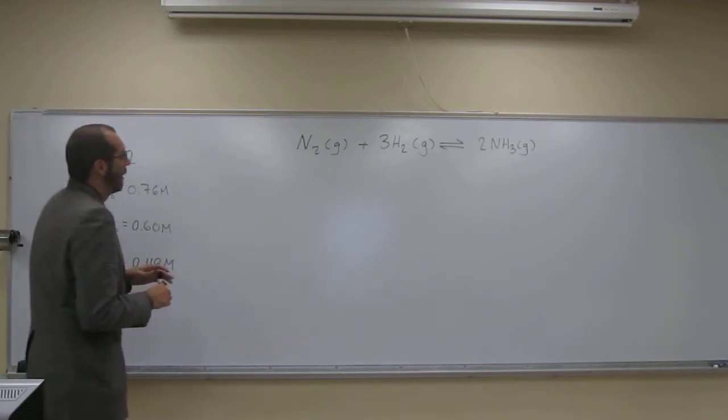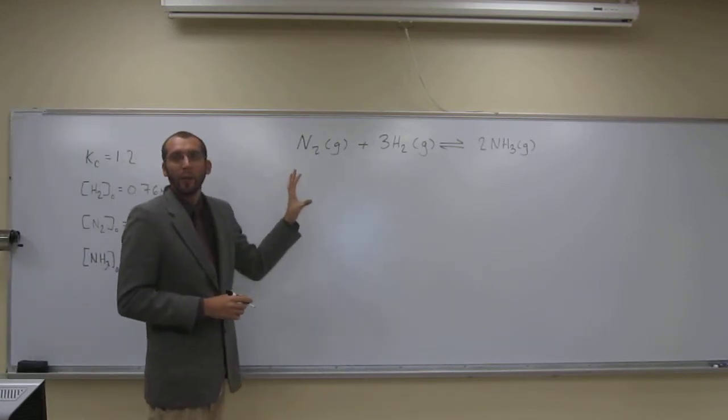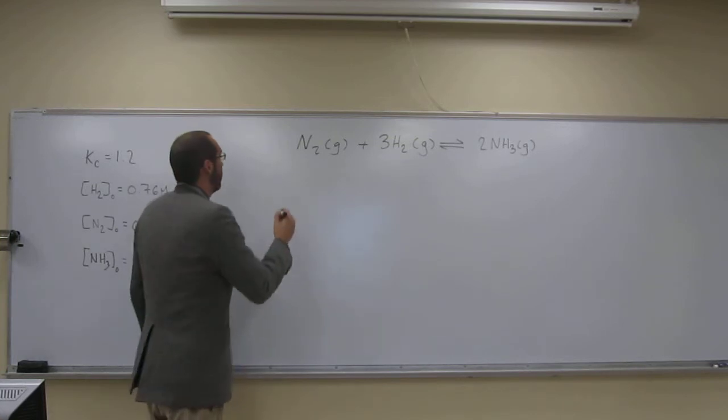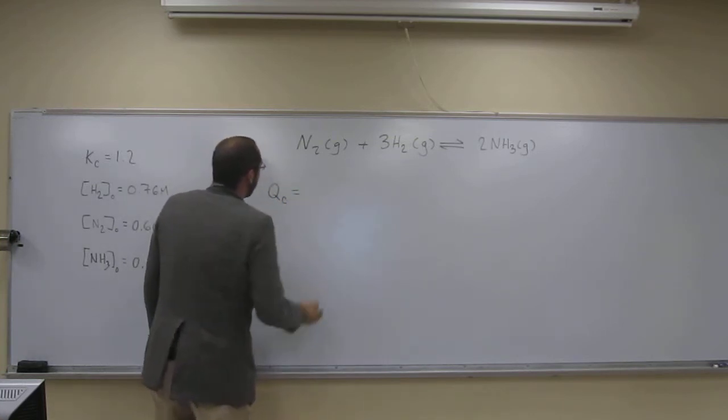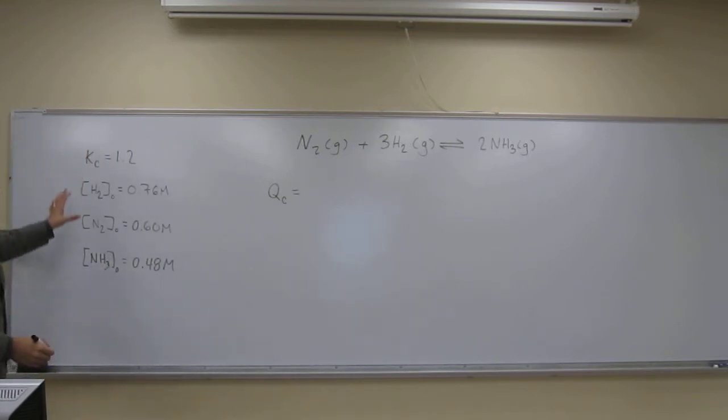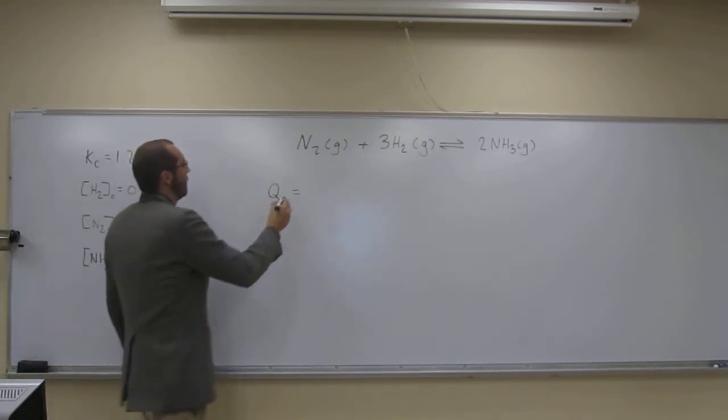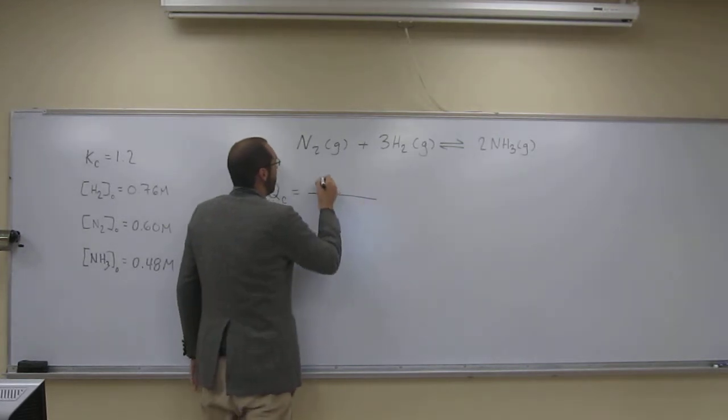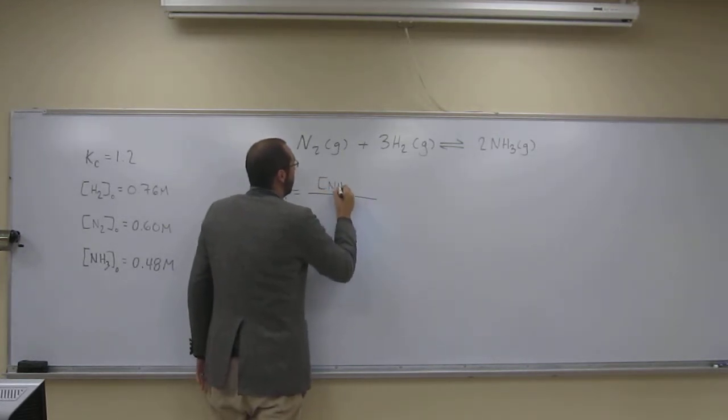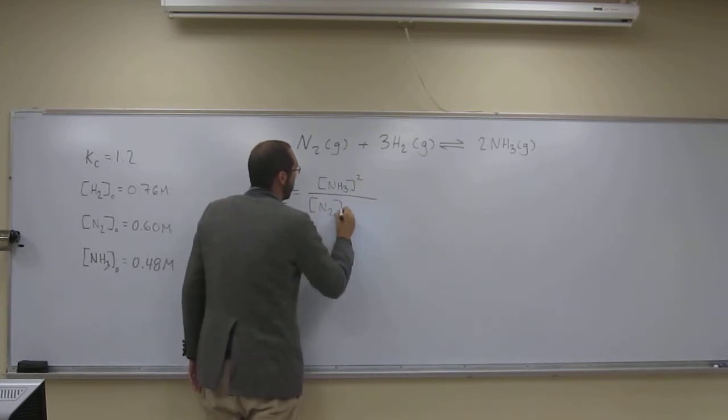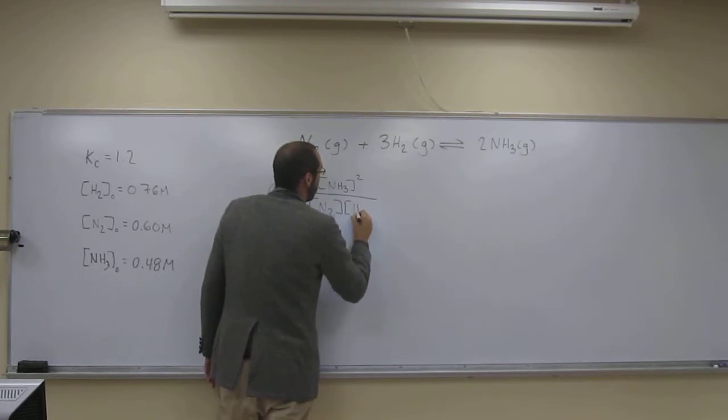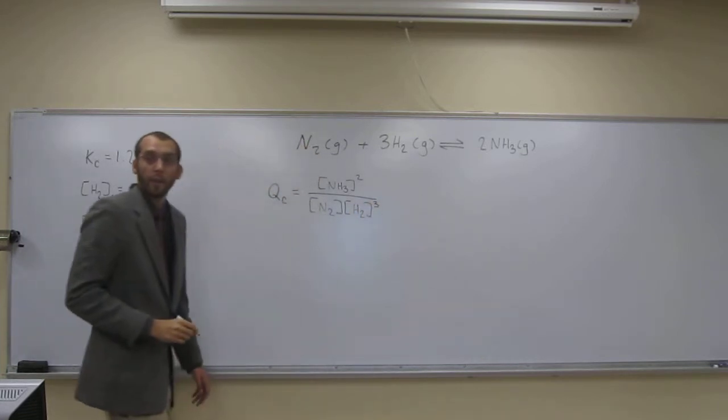What you need to do is compare Q and K. Let's write what Qc would be - it would be the same expression as Kc, right? So it would be the concentration of ammonia squared divided by nitrogen times the concentration of hydrogen cubed, like that.